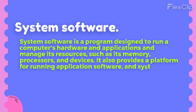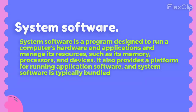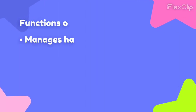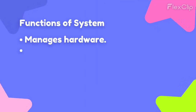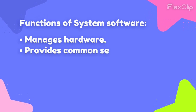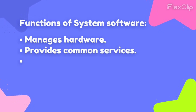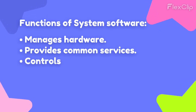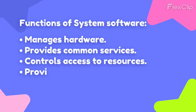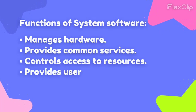Systems Software is typically bundled with a computer's operating system. The functions of Systems Software include: manages hardware, provides common services, controls access to resources, provides user interface, and provides security.